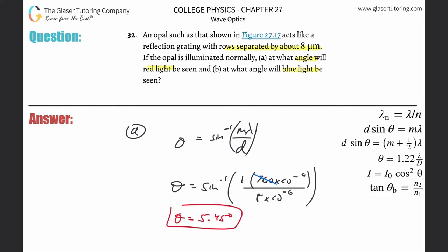You have to know the wavelength for blue light. So that's about 460 nanometers. So literally just plug that value in now. This is inverse sine of 460 times 10 to the minus ninth divided by eight times 10 to the minus sixth.